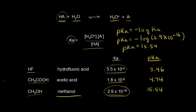As we go up on our table, we're increasing in acid strength. Out of our three weak acids, hydrofluoric acid is the strongest, so it has the largest value for Ka. But notice it has the smallest value for pKa. So the lower the value for pKa, the more acidic your acid. 3.46 is lower than 4.74, and so hydrofluoric acid is more acidic than acetic acid.